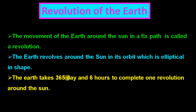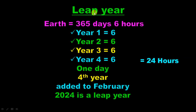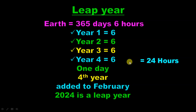The earth takes 365 days and 6 hours to complete one revolution around the sun. Every year, 6 hours accumulate — after four years, 6 plus 6 plus 6 plus 6 equals 24 hours, which is one full day.